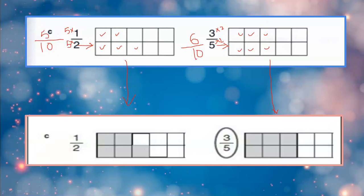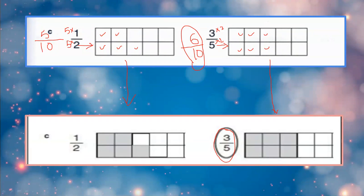So 5 upon 10 is greater or 6 upon 10 is greater? The denominators are both 10, so 6 upon 10 is greater. But the question gives you 3 upon 5 — that is your mental math conversion. That's why we are circling 3 upon 5. Comparing these two, 1 upon 2 is not greater; 3 upon 5 is greater.